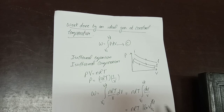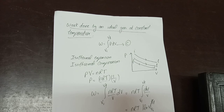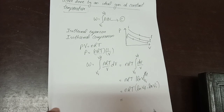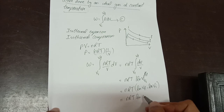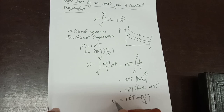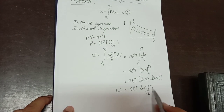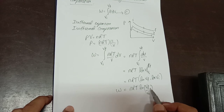Evaluating the limits gives W = nRT [ln(Vf) − ln(Vi)] = nRT ln(Vf/Vi). This is the work done by an ideal gas at constant temperature. For isothermal expansion Vf > Vi so the work done is positive, and for isothermal compression the work done is negative.